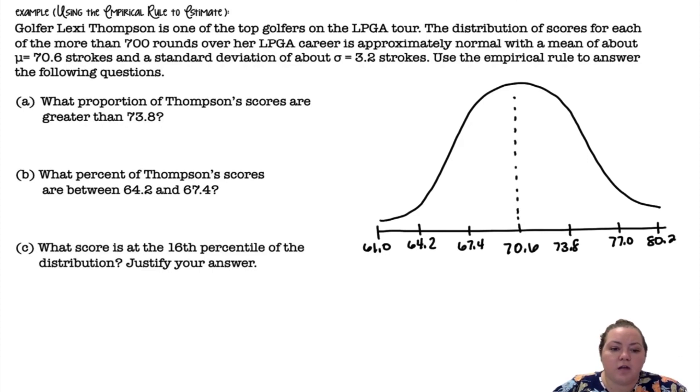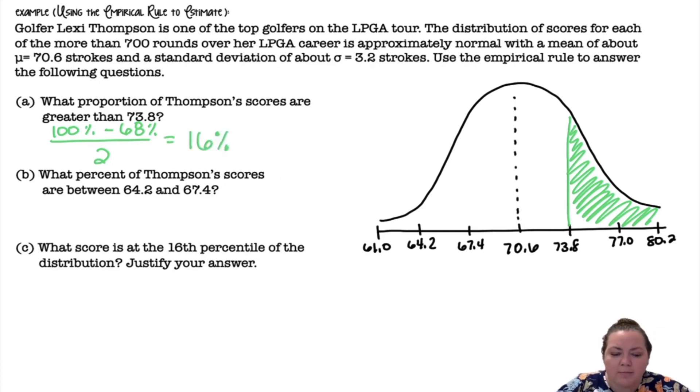What proportion of Thompson's scores are greater than 73.8? If I go to 73.8, greater than I'm shading above. So I could add all those sections up together. Or I can think about it as 100% under the curve minus the 68% in the middle, but then divide it by 2 because it's really only that one section. It's only on half of it. And we get 16%. Or I could add the 13.5 plus the 2.35 plus the 0.15 and get 16% that way.